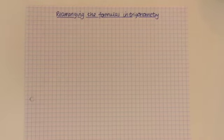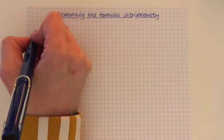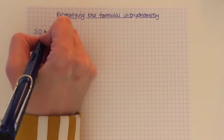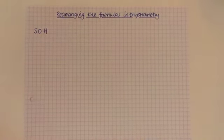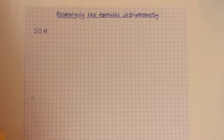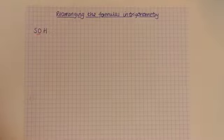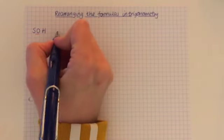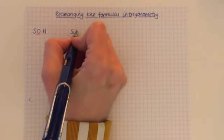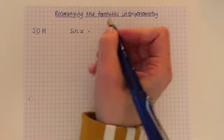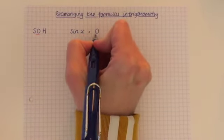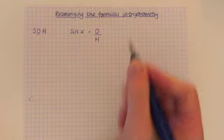So let's start with SOH. This is what it looks like, and how I always remember the formula for SOH, a little reminder, is the middle number is always on the top part of the fraction. So it's sine of the angle, we'll just say sine X, equals O over H.